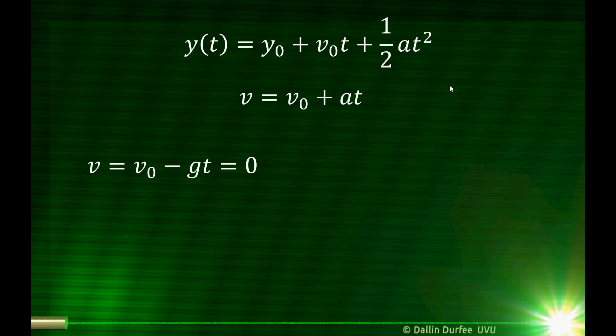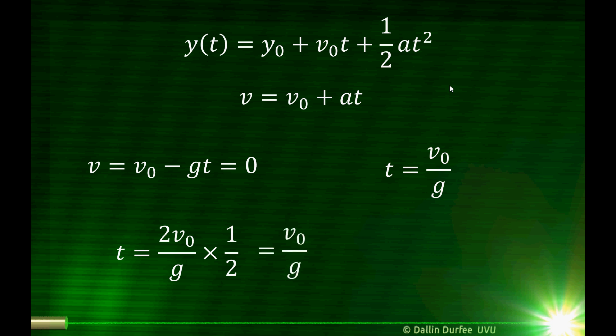We just need to find the time when the velocity is equal to zero. The equation is v-naught minus gt equals zero, so the time is just v-naught over g. There's another way to find this: I already found the total time in the air is 2v-naught over g. Since the flight is symmetric — it takes just as long to go up as to fall back down — the time to reach the top is just half of that, which is v-naught over g. Same result.